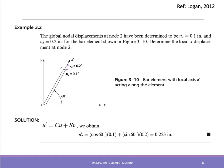Here is a simple example to illustrate the relationship. We need to find the local displacement at node 2, given that node 2 undergoes a global displacement of u2 = 0.1 and v2 = 0.2.